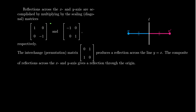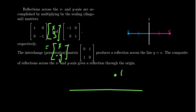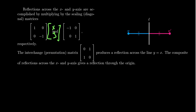In contrast, if we multiply the matrix [1, 0; 0, -1] by the vector (x, y), we get the vector (x, -y), which changes the y-coordinate but leaves the x-coordinate alone. That is reflection across the x-axis. So the first matrix [1, 0; 0, -1] gives reflection across the x-axis, and the second matrix [-1, 0; 0, 1] gives reflection across the y-axis.